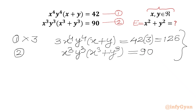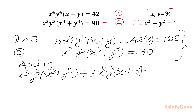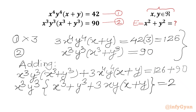Now we will add these two equations. By adding both equations we get: x³·y³·(x³+y³) + 3·x⁴·y⁴·(x+y) = 126 + 90. Now I can take x³y³ common from our LHS, so factoring out x³y³ we get in the bracket: x³+y³ + 3·xy·(x+y). The RHS is 126 + 90 = 216.